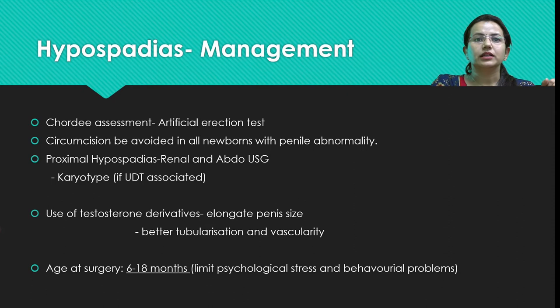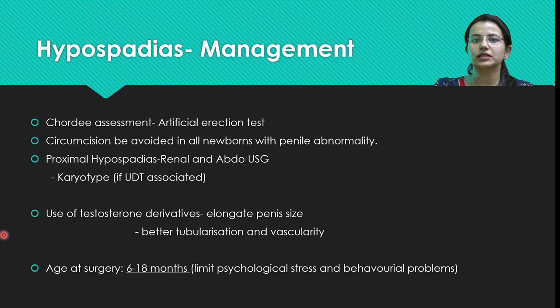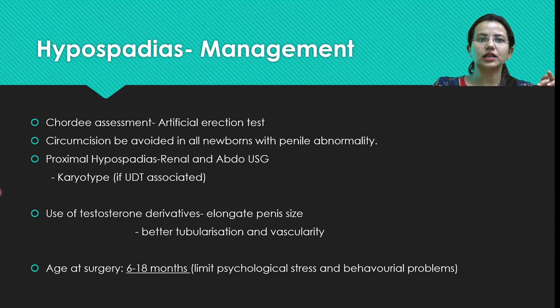Testosterone derivatives have been used in cases of micropenis to elongate penile size, allowing better tubularization and vascularity. When a child has micropenis with associated chordee, some surgeons first correct the chordee, then administer testosterone supplementation to increase penile size, and subsequently perform urethroplasty using supple, well-vascularized tissue.